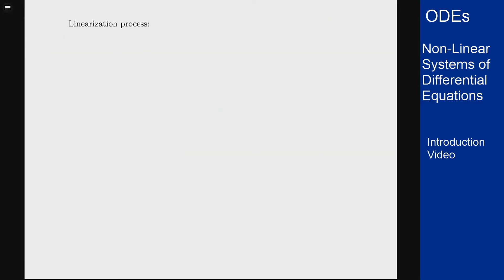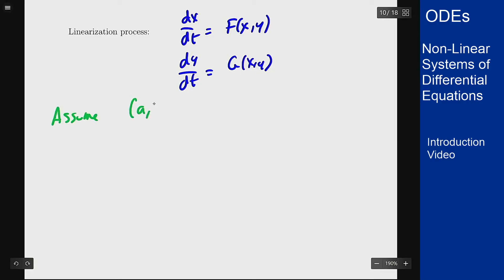This idea is called linearization. We're going to linearize the non-linear system around the equilibrium solution to get what's going to happen near that point. We'll have a system: dx/dt = f(x,y) and dy/dt = g(x,y), and assume the point (a,b) is the equilibrium solution. Now we're going to approximate these functions f(x,y) and g(x,y) by their tangent planes around this point.